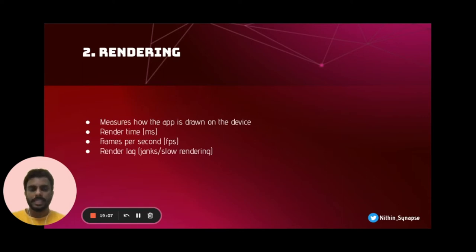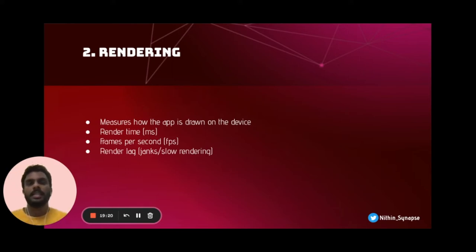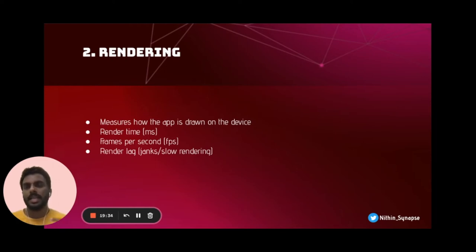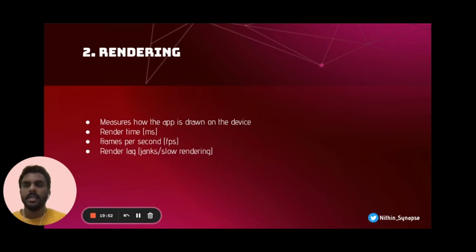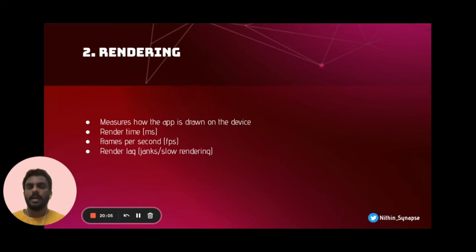Rendering is how our app is drawn on the device. When you open an application, it loads — it is actually drawing the application on the device. For example, if you are playing a mobile game, you interact with the game interface and sometimes the rendering is too slow and the game literally hacks. That is a rendering issue because it takes longer time to render or draw the app. Rendering time plays a critical role, frames per second plays a critical role, and render lags — we call it janks or slow rendering. If it is taking longer time to render, the app will hang and keep freezing.